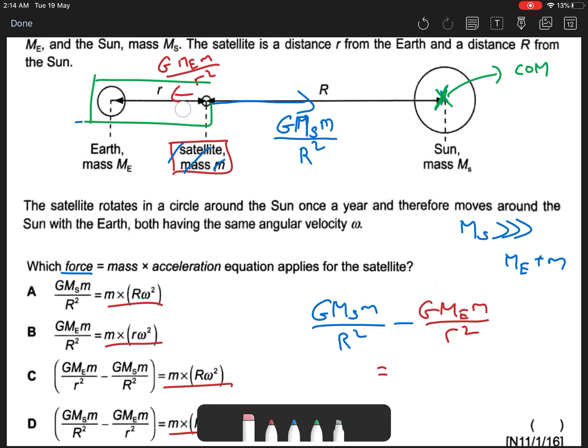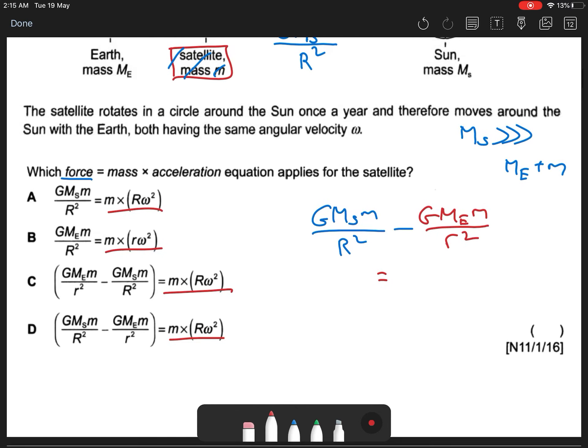I know my satellite will orbit around this big R. So my mRω² should be small m times big R, then ω².